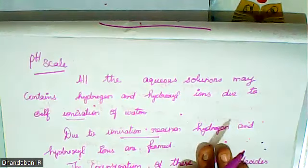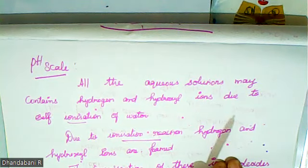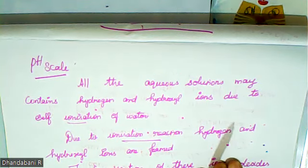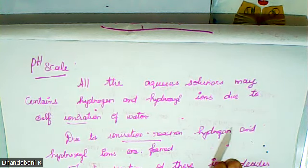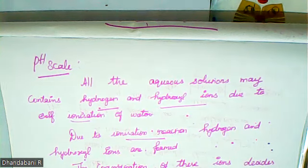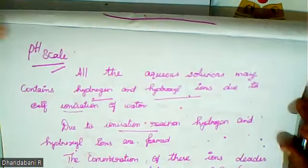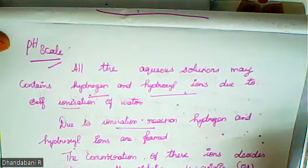The next topic is pH scale. pH scale: all aqueous solutions contain hydroxyl ions due to the self-ionization of water. All solutions have H+ and OH− ions — that is the self-ionization of water. pH scale is what we use to identify the nature of a solution.